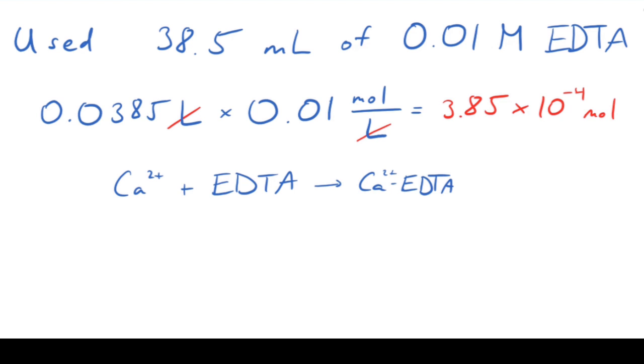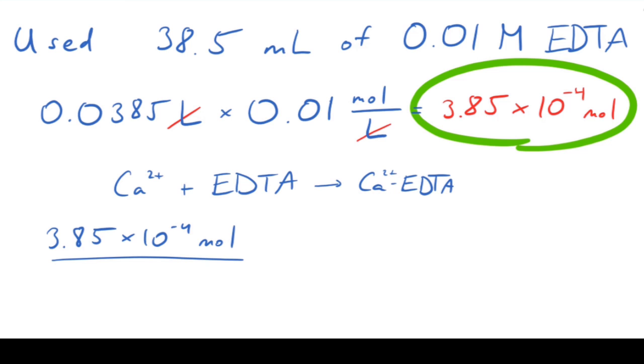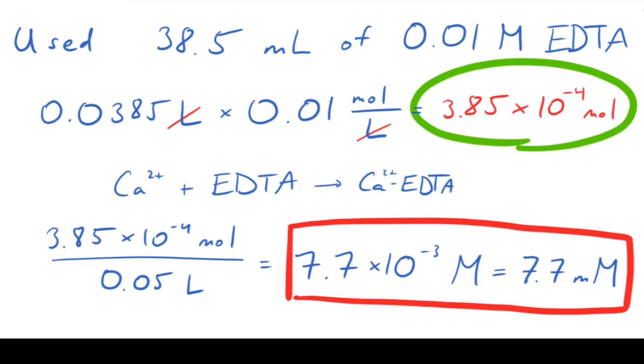Since the reaction between both calcium and magnesium ions and EDTA happens in a 1 to 1 ratio, this is also the total number of moles of calcium and magnesium in our aliquot. This, divided by the volume of the aliquot, 50 milliliters, which is 0.05 liters, gives us the cumulative concentration of our unknown for magnesium and calcium ions.